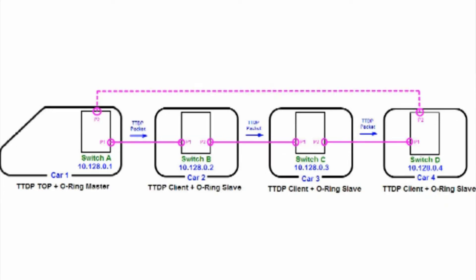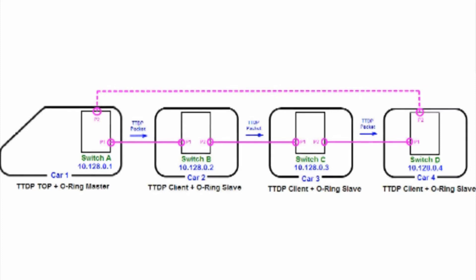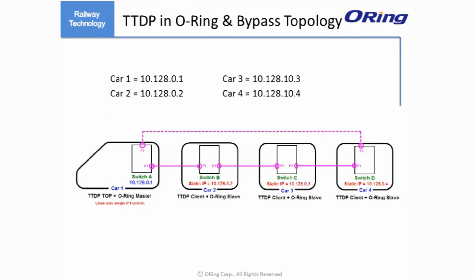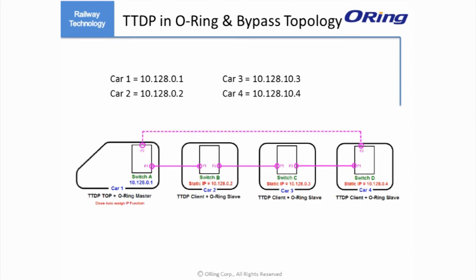To avoid this problem, the following settings must be done. In a ring topology, you must set the forward port of the ring master to car 2 and the blocking port to car 4. This will ensure TDDP works correctly in normal conditions. Next, you must turn off the TDDP setting on the web interface of the switch by setting inorg_flag to inhibit. This must be done before the rearranged train starts running. These settings will ensure the IP address of each switch in a ring or bypass topology remains the same during operation.